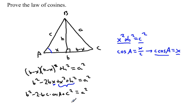And if I just change the order of this a little bit, I get a squared is equal to b squared plus c squared minus 2bc times the cosine of A, which is one of the cases of the law of cosines. I could drop altitudes from different angles to prove the other two cases as well.